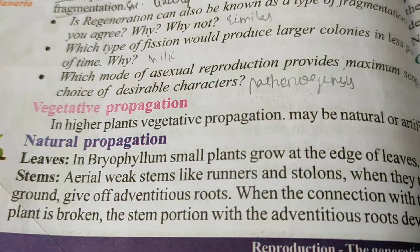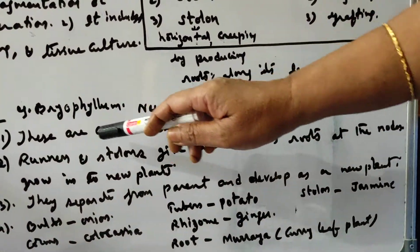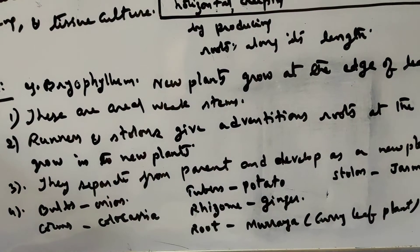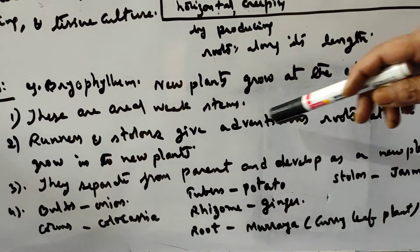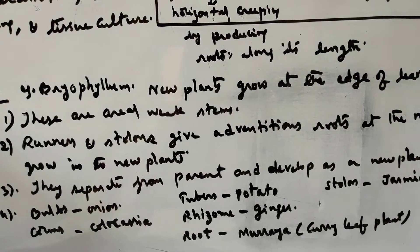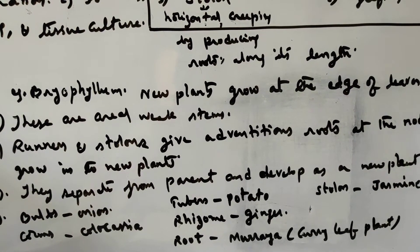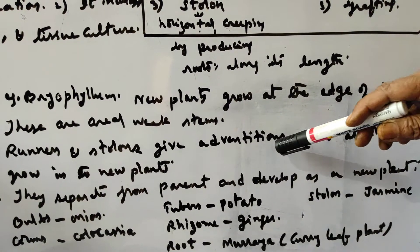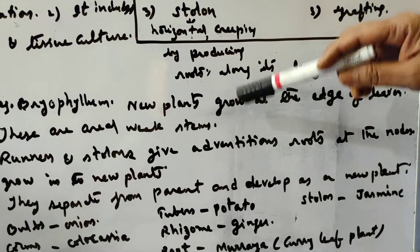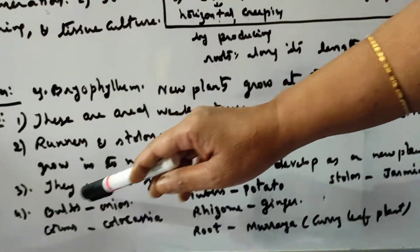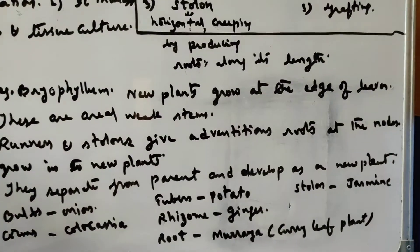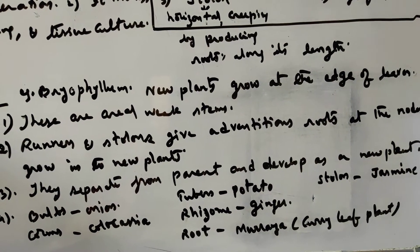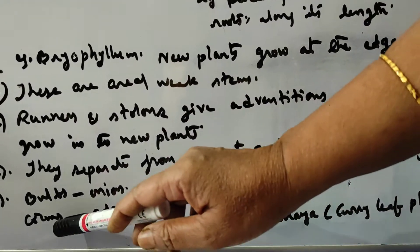From the leaf edges, new plants will grow — this is exceptional reproduction under natural propagation. Coming to stems, aerial weak stems come under this category. Runners and stolons give adventitious roots at the nodes and grow into new plants. All weak-stemmed plants — creepers and climbers — can be seen in the kitchen garden. They produce adventitious roots near the nodes from which new plants develop.